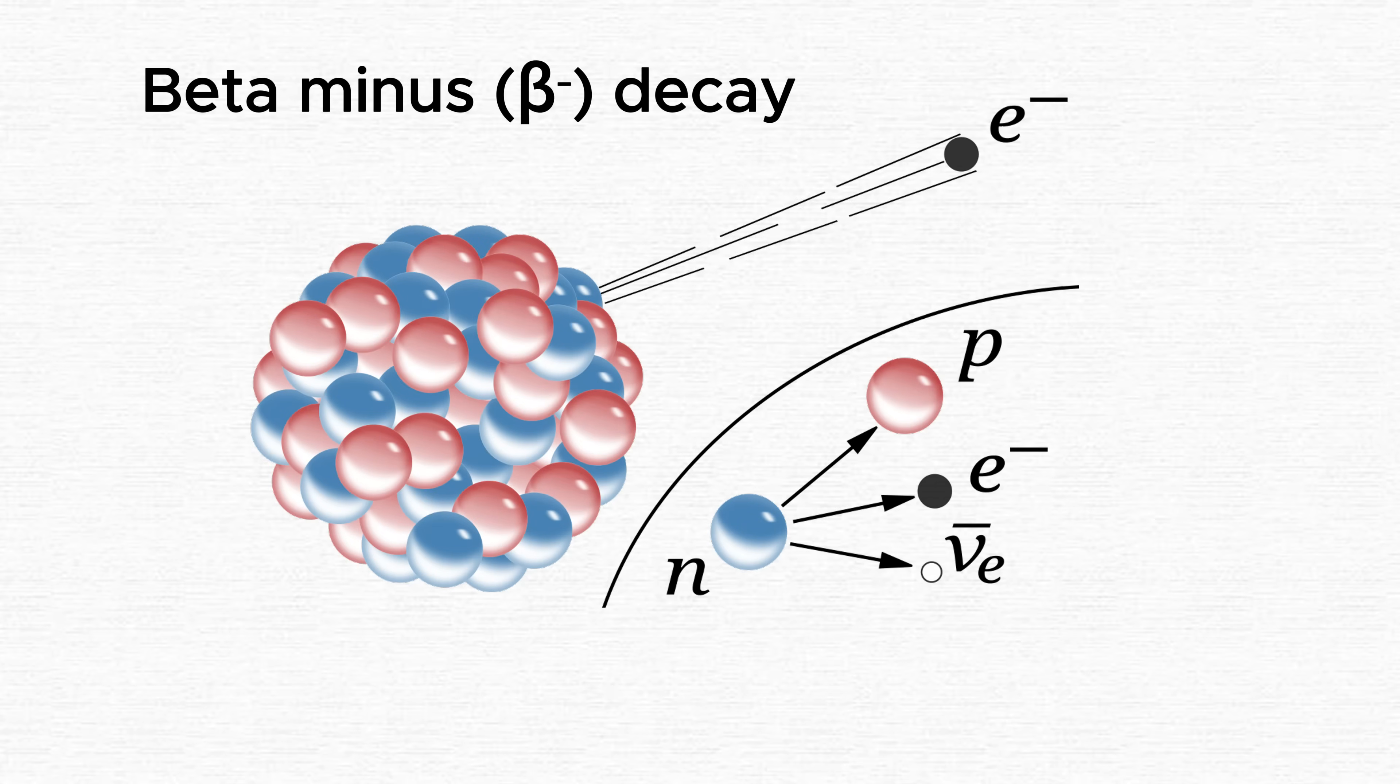Consider this example. In the sun's core, two protons collide, producing a deuterium, one proton and one neutron, a positron, and an electron neutrino. The number of baryons before and after the reaction remains two. Another example, when a neutron decays into a proton, the baryon number stays one, with only the quark configuration changing.